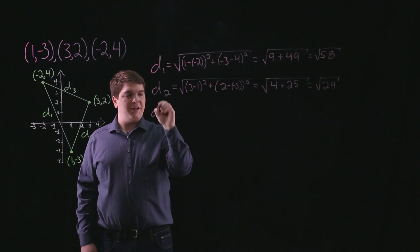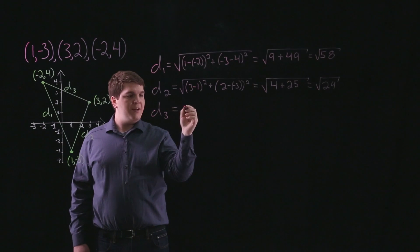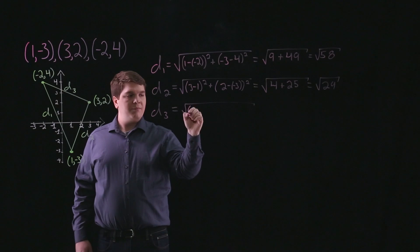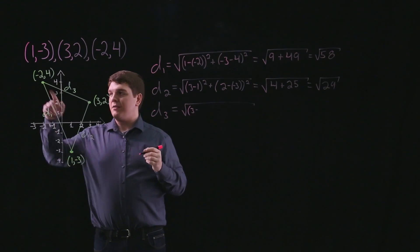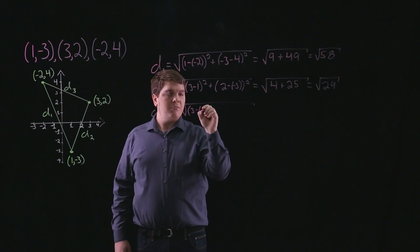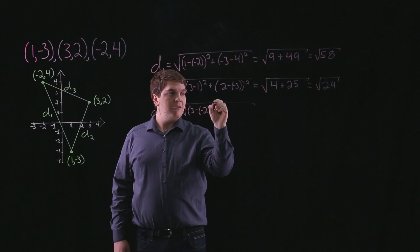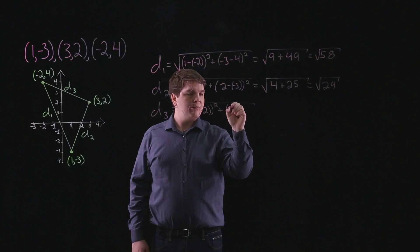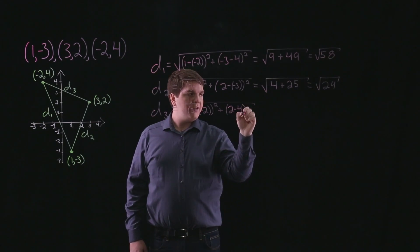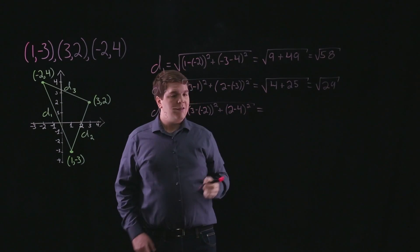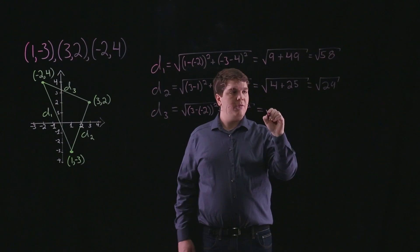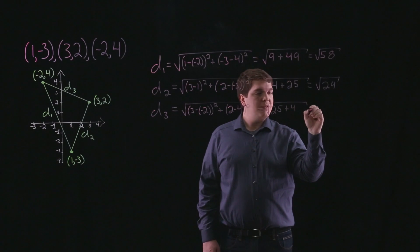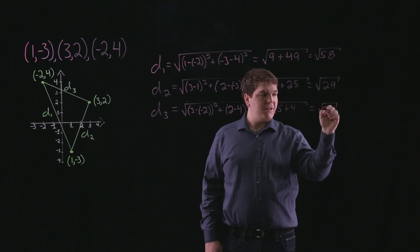Now to find the length of d3, we have d3 is equal to the square root of (3 minus negative 2) quantity squared plus (2 minus 4) quantity squared, which again is equal to the square root of 25 plus 4, which is the square root of 29.